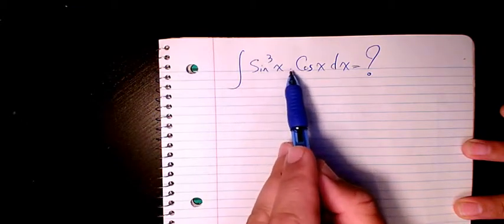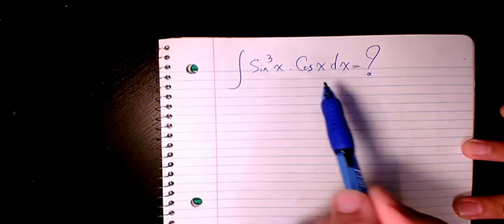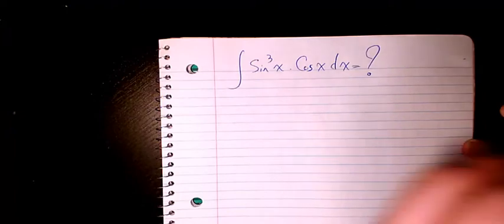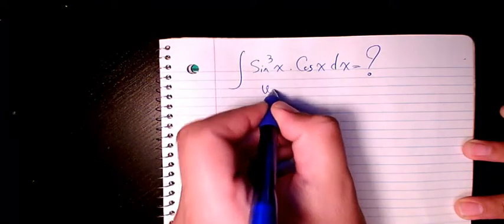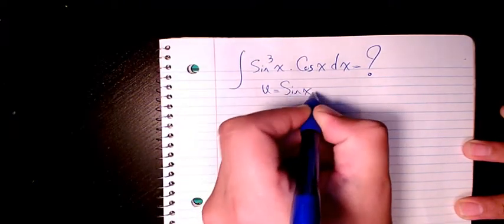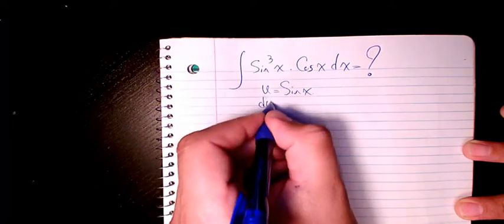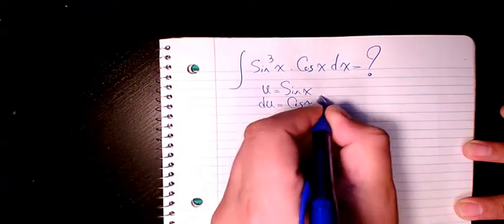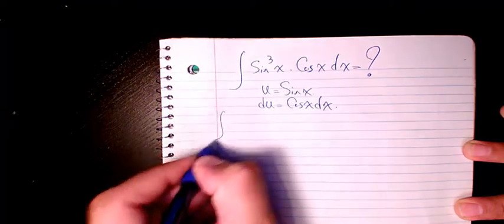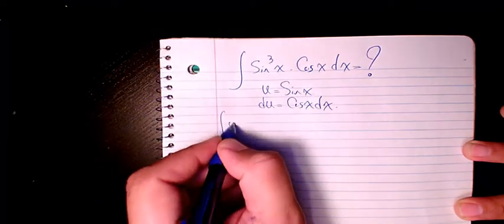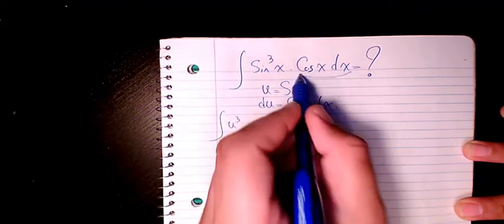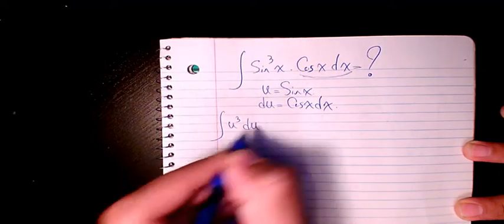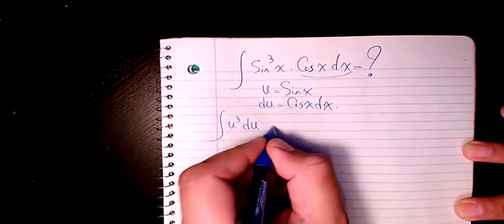integrate sin³(x) times cos(x) dx. I use substitution method. I consider u as sin(x), so du will be cos(x) dx. So that changes to u³, and this part is going to be du.